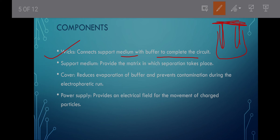The setup includes an anode and cathode connected by a medium with a buffer solution. A supporting medium provides the matrix where separation takes place. A cover is used to reduce evaporation of the buffer and prevent contamination during the electrophoresis run. A power supply provides the electric field for the movement of charged particles.